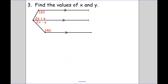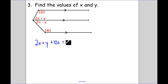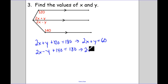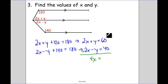Next example: all three of these lines are parallel. What special angle pair do I have? Those are same side interior. So 2y plus 120 equals 180, simplifying to 2x plus y equals 60. For the bottom pair, also same side interior: 2x minus y plus 140 equals 180, simplifying to 2x minus y equals 40. I have two equations and two unknowns. Adding them together: 4x equals 100.